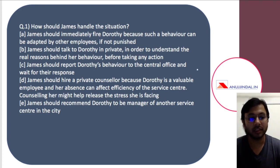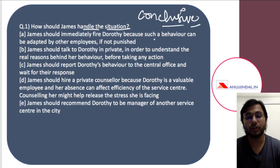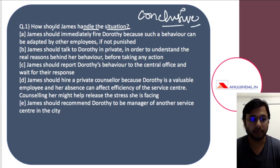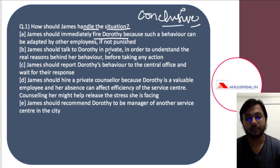Let's have a look at the question: How should James handle the situation? What should James be doing? This is asking you to identify what James should do now that he's facing this problem. Option A is: James should immediately fire Dorothy because such behavior can be adapted by other employees if not punished. This looks very practical and a very good option.